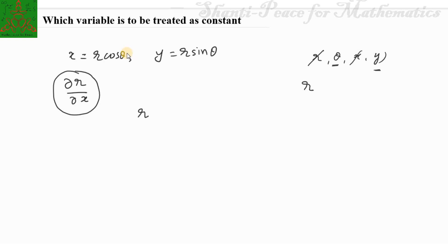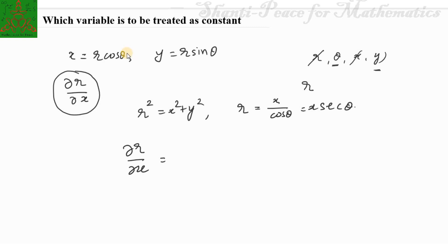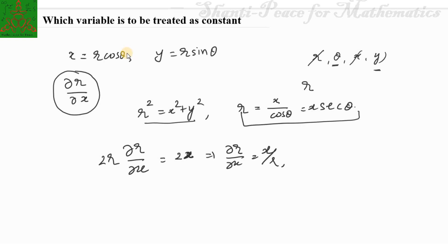That relation can be computed in two ways. First, you can express r² = x² + y², and another way is r = x/cosθ = x·secθ. When you calculate ∂r/∂x, you get two different results. Differentiating the first equation gives ∂r/∂x = x/r (treating y as constant), while the second gives ∂r/∂x = secθ. There is no reason to suppose these two values are equal, which creates confusion about which variable is regarded as constant.